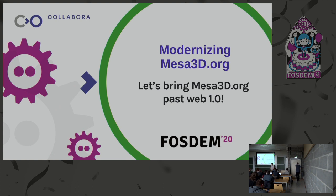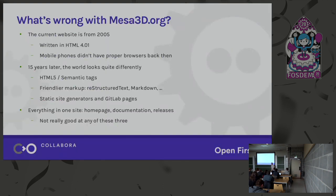So the first thing to talk about is: what's wrong with mesa3d.org right now? It's a pretty old website, written about 15 years ago. The current version of the web part — not necessarily the content — is written in HTML 4.401. Mobile phones didn't have browsers back then. If you ever try to go to mesa3d.org on your phone to read some documentation while you're on the train, it's not fun. That's kind of what started this for me — I wanted to check some stuff while I was on the bus.